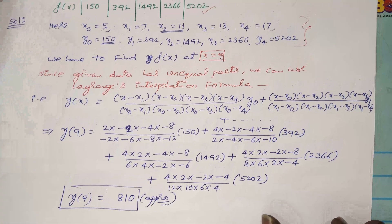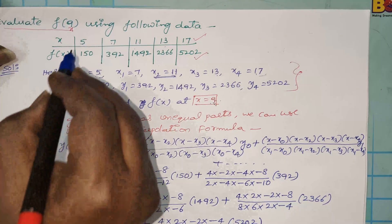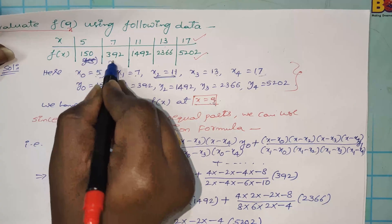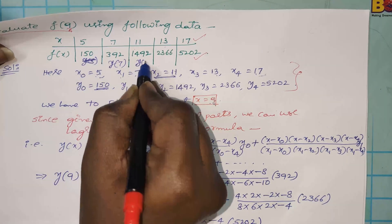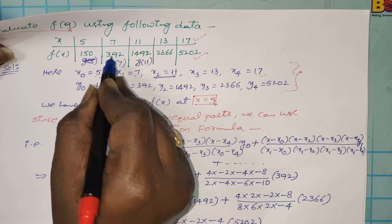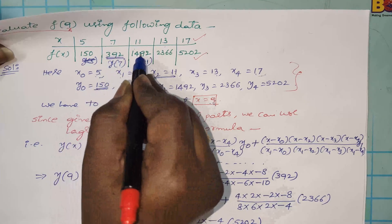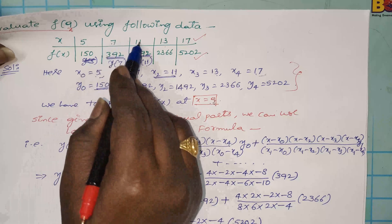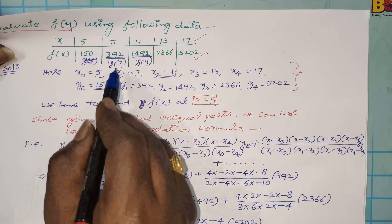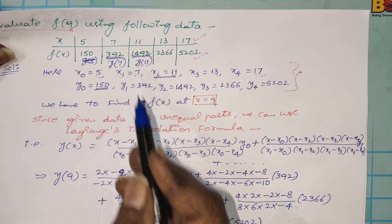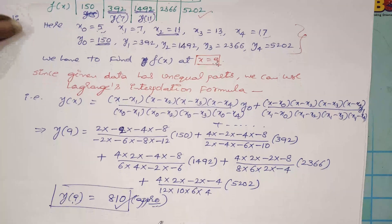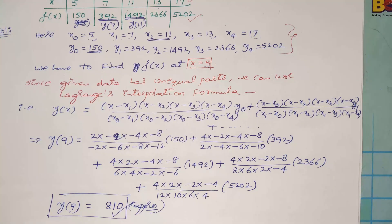One more important check: y of 9 should lie between y of 7 equals 392 and y of 11 equals 1492. Since 9 lies between 7 and 11, y of 9 should lie between y of 7 and y of 11. We got 810, which satisfies this condition. In the next video I will give some more examples on this. Thank you very much.